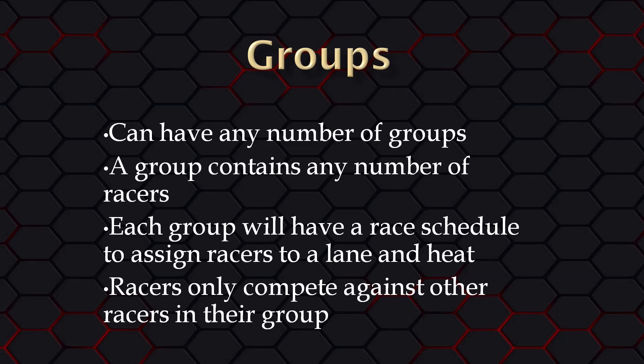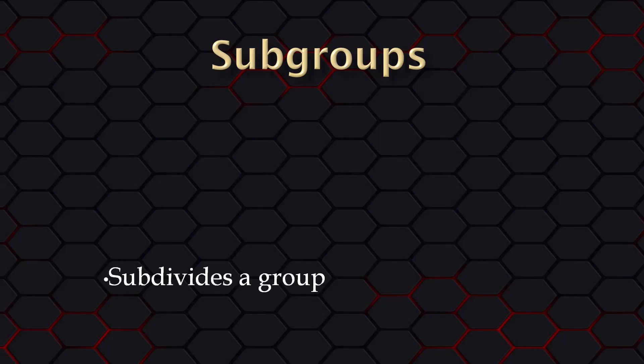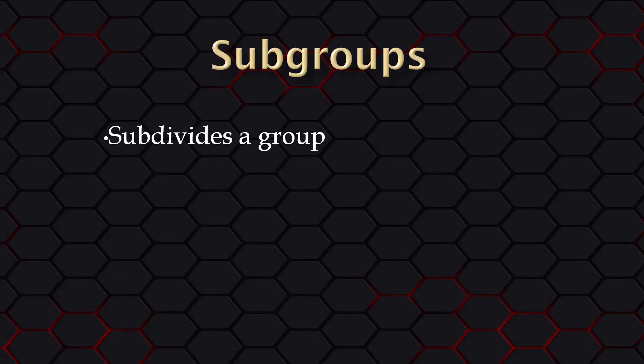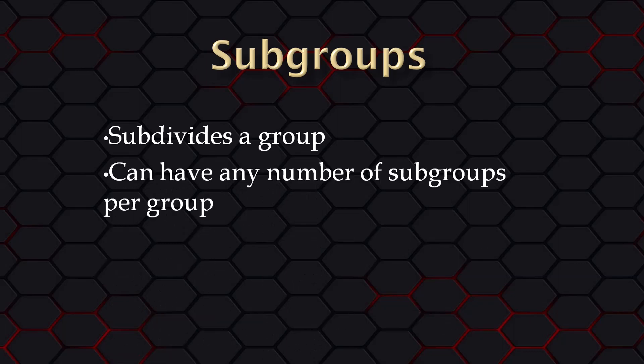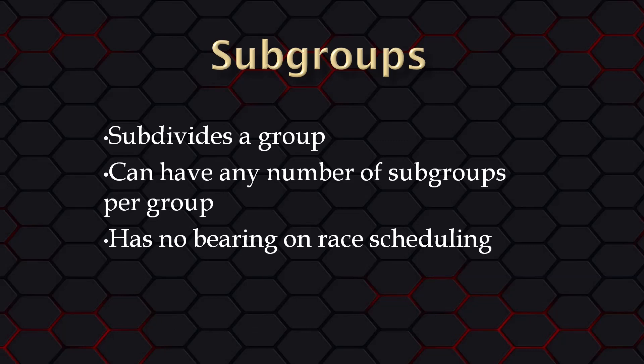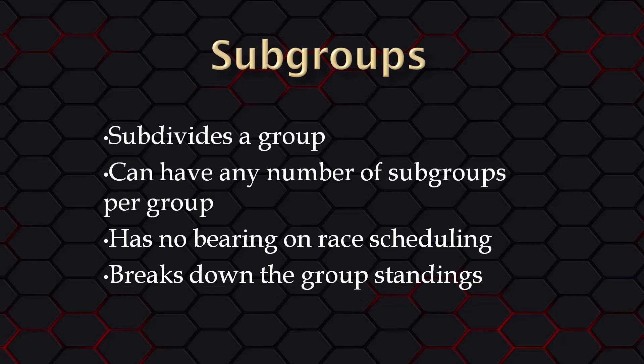Where many people get tripped up is the concept of subgroups. Subgroups allow you to subdivide your race groups. You can have any number of subgroups for each race group. One big thing to know is that subgroups have absolutely no bearing on race scheduling. Scheduling is only based on the race group, so racers from different subgroups within a group can face each other. Where subgroups are handy is to break down the group standings into finer detail, though there are some cases where you may not need to use subgroups.